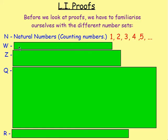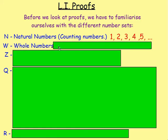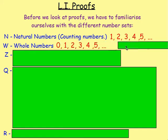W stands for Whole Numbers. That is your whole numbers, which is the exact same as the natural numbers, but it also includes 0.